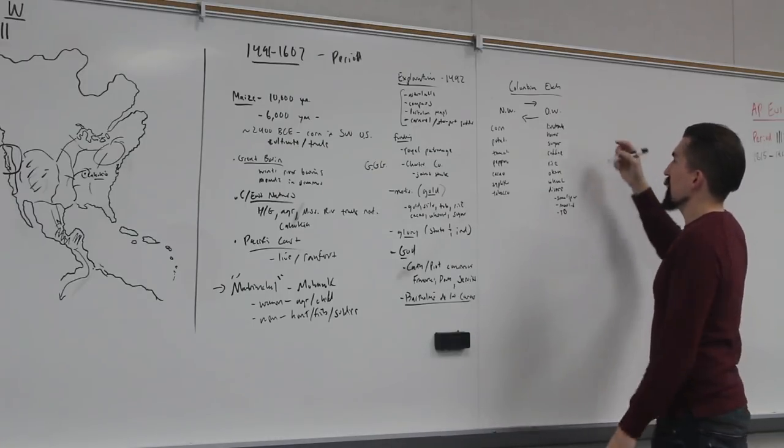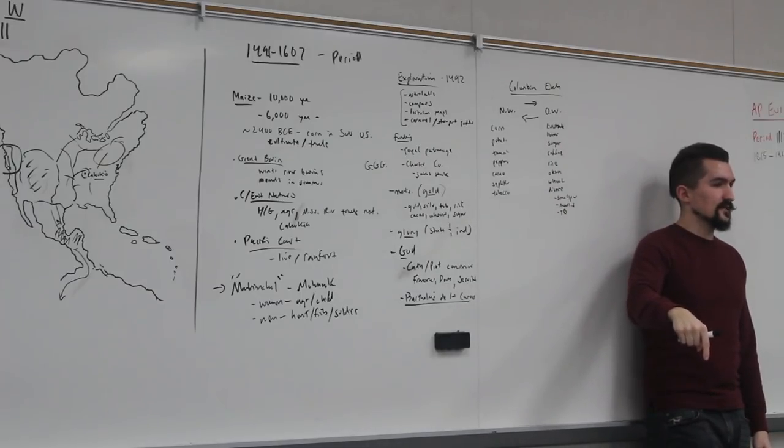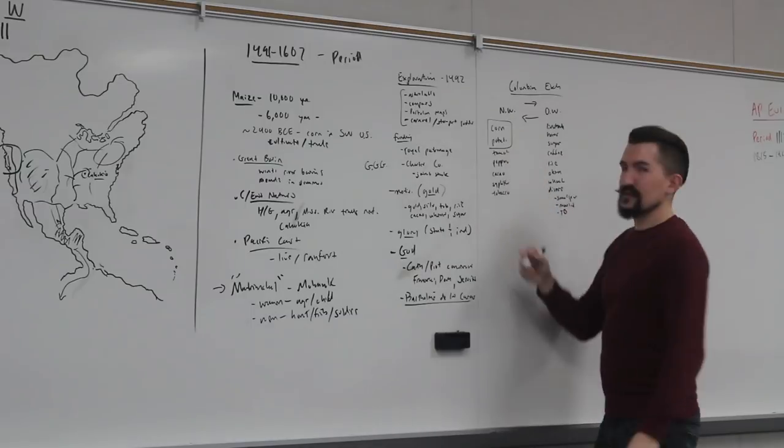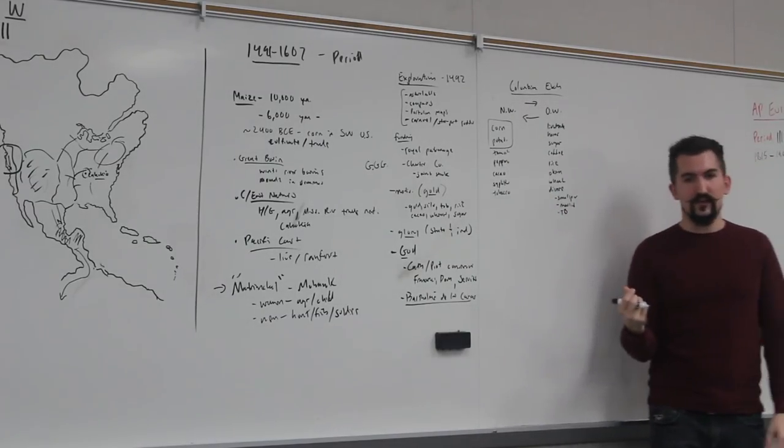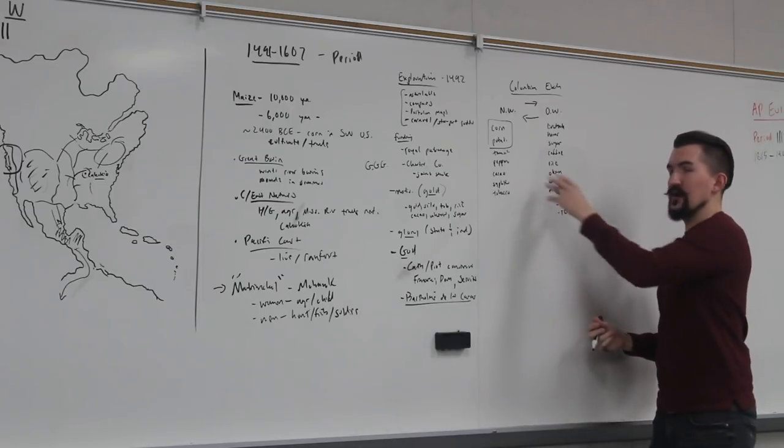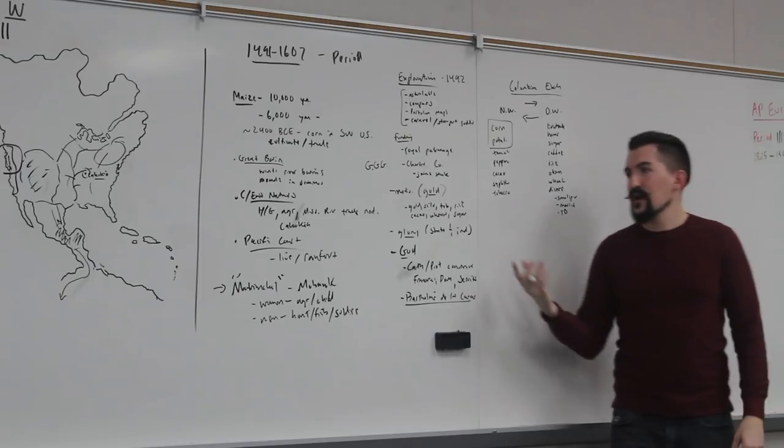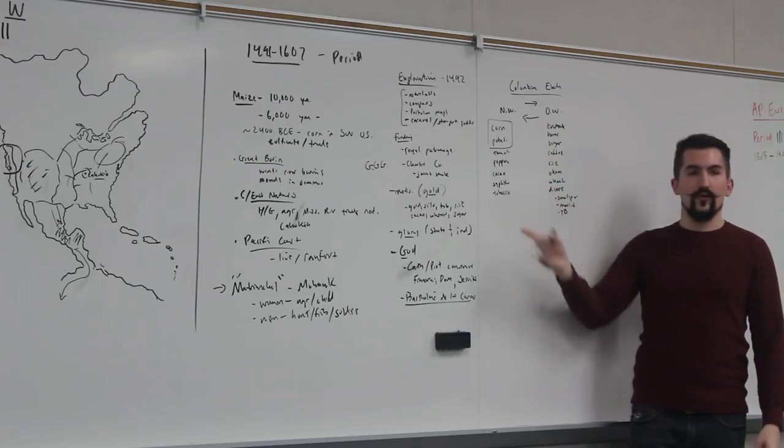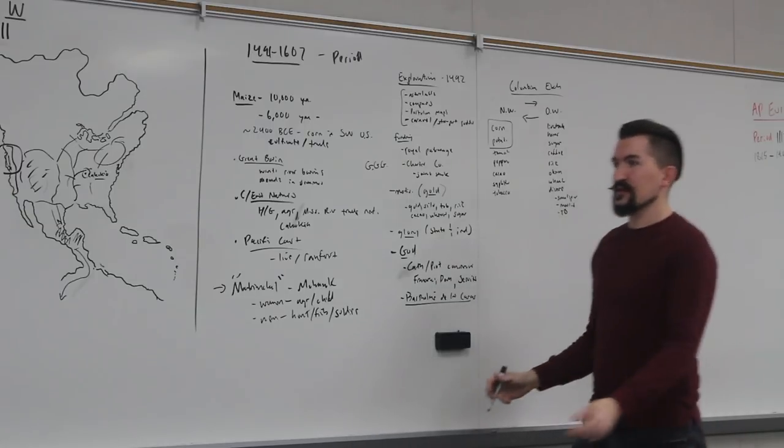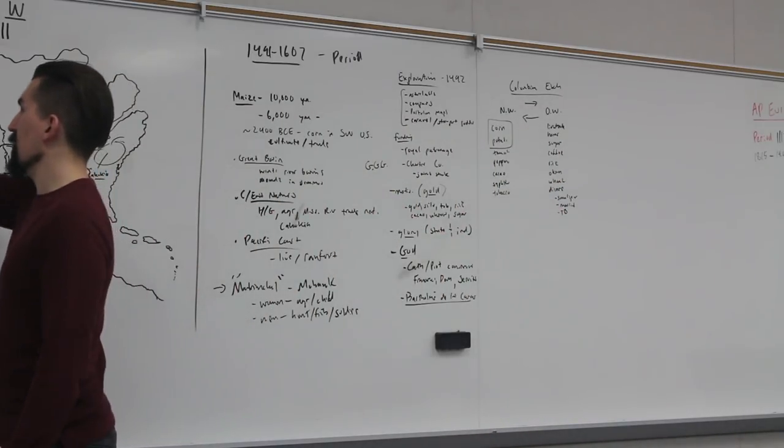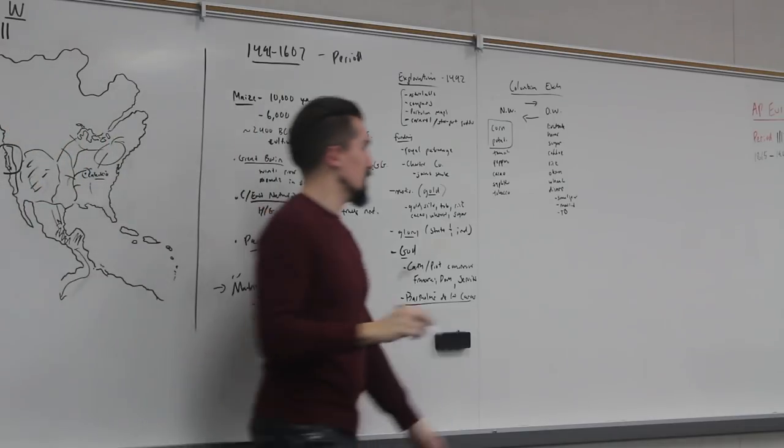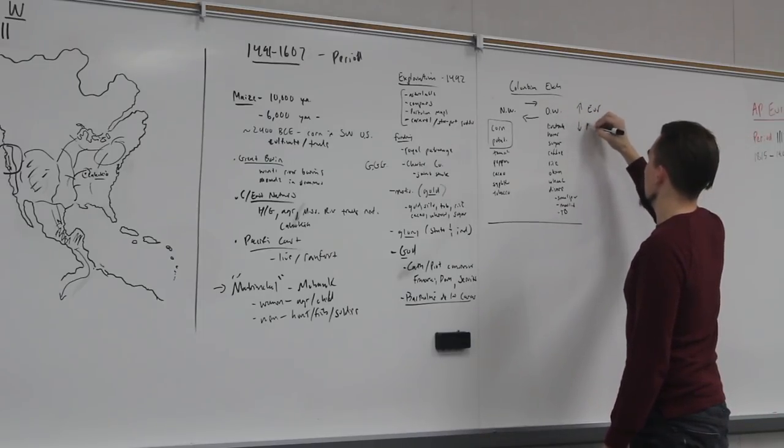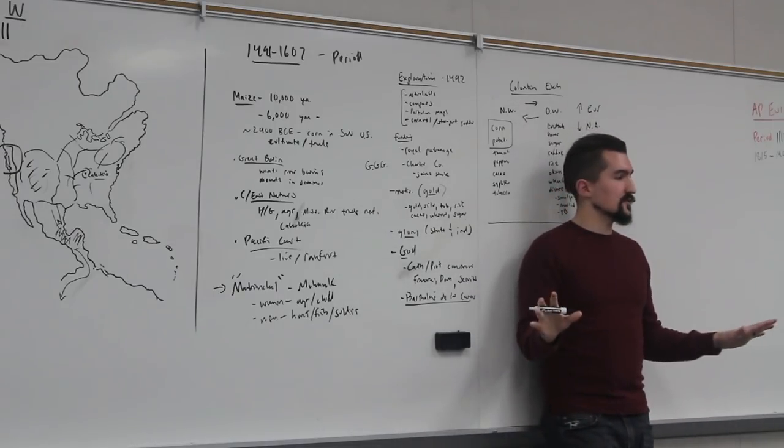So the impact here is the old population just dies. 90% of people die, so that's a big deal. The old world though, you actually have a population increase because these foods are calorie dense, that helps people survive. You also have Europeans especially get super rich off of this stuff because they're able to bring it over and Europeans, Africans, and Asians are paying a lot for it. The Europeans make a ton of money off of selling amongst themselves as well as selling to the African and Asian kingdoms. That is the Columbian Exchange. Essentially enriches Europeans and decimates the population of Native Americans unintentionally.